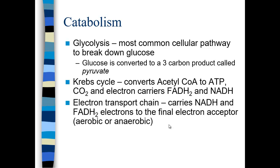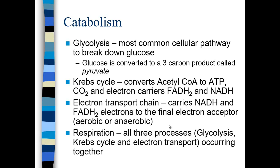Then finally in catabolism, you have the electron transport chain, where electron carriers NADH and FADH2 deliver their electrons to the final electron acceptor. With aerobic metabolism the acceptor is oxygen; with anaerobic metabolism it can be other electron acceptors. All three processes together — glycolysis, the Krebs cycle, and the electron transport chain — occur to facilitate respiration, whether aerobic or anaerobic.